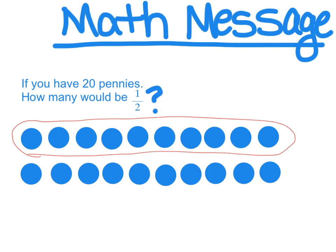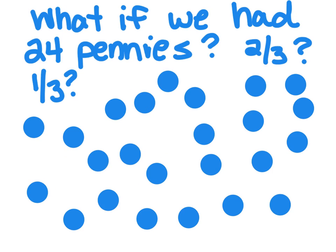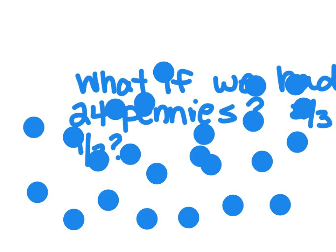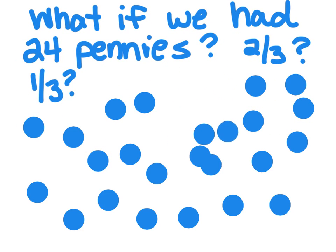Okay, but what if we had 24 pennies and I wanted you to find two-thirds? In this case, when I look at that, it kind of looks like a mess, right? So I might want to put my pennies into three groups. So I'm just going to move things around here.